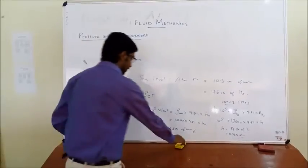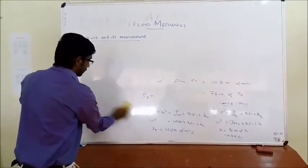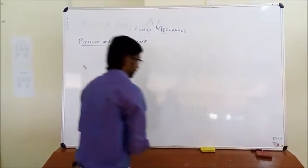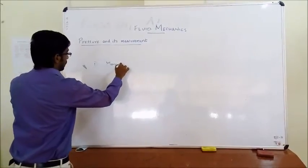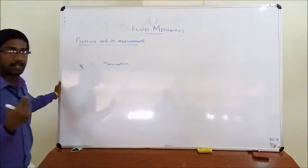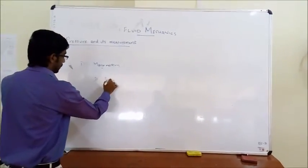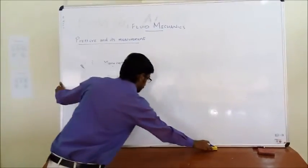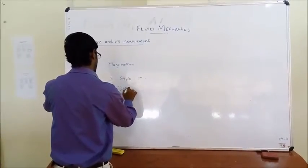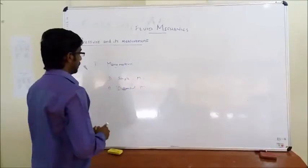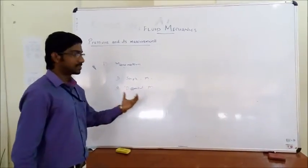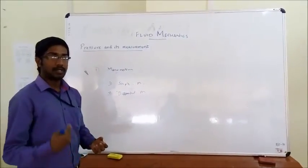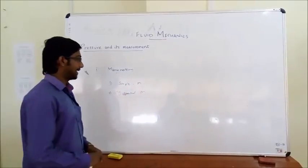Now let us move to the measurement of pressure. There are mainly two types of equipment used for measuring pressure: first is manometers, and the second is mechanical meters. In manometers, there are mainly two types: simple manometer and differential manometer. Manometers are instruments used for measuring pressure by balancing the fluid column against another fluid.